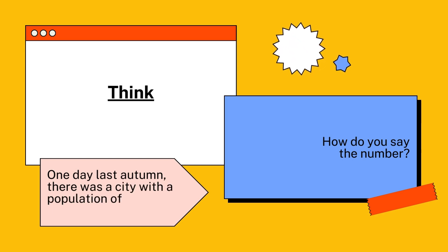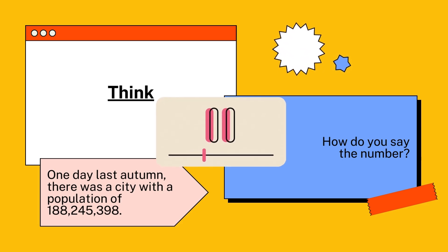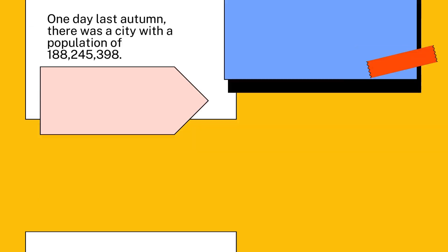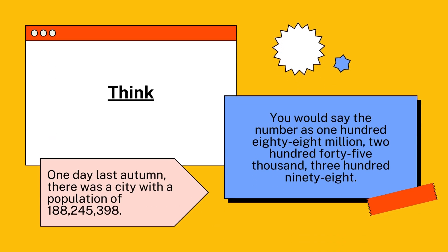Have a look at the think problem on the screen. One day last autumn there was a city with a population of this number. How would you say the number in this problem? Pause this video and have a think about it.